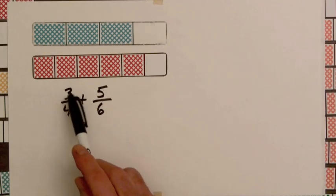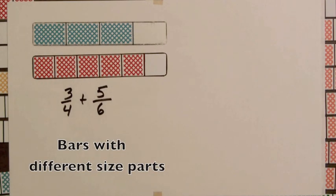So the total for the two days is 3/4 plus 5/6 miles. Now if we just add the numerators here, we get eight, and that's eight parts, but that's misleading because these parts have a different size. So we need to replace these bars by bars having the same size parts.